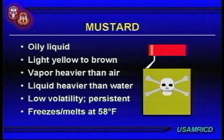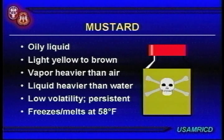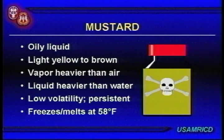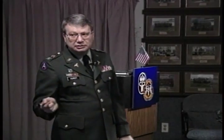Mustard is an oily, thick substance — in bulk containers it looks just like dirty motor oil. It is heavier than air and heavier than water. Because it's oily, it has low volatility and is quite persistent. Importantly, depending on the manufacturing process, mustard freezes around 57–58 degrees Fahrenheit. During the Gulf War ground campaign, temperatures were below that, meaning pure mustard thrown at us would have just been little ice cubes — but there are ways around that.